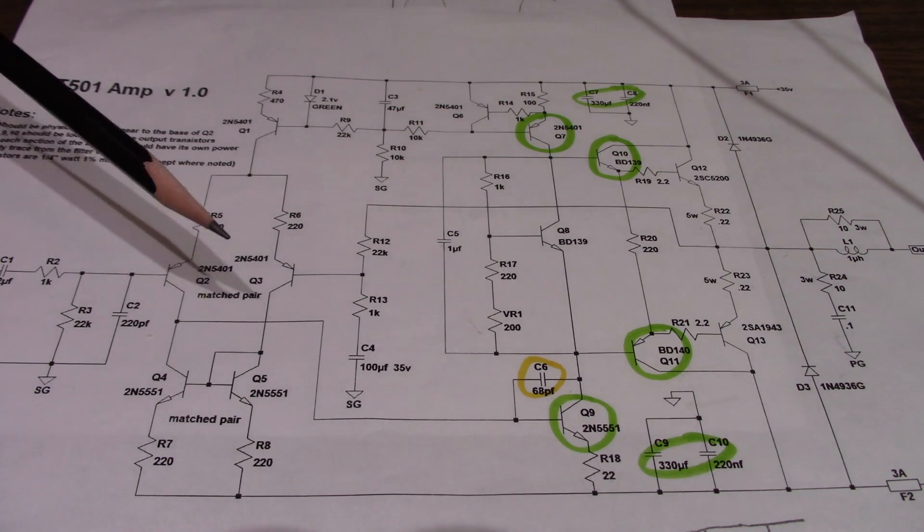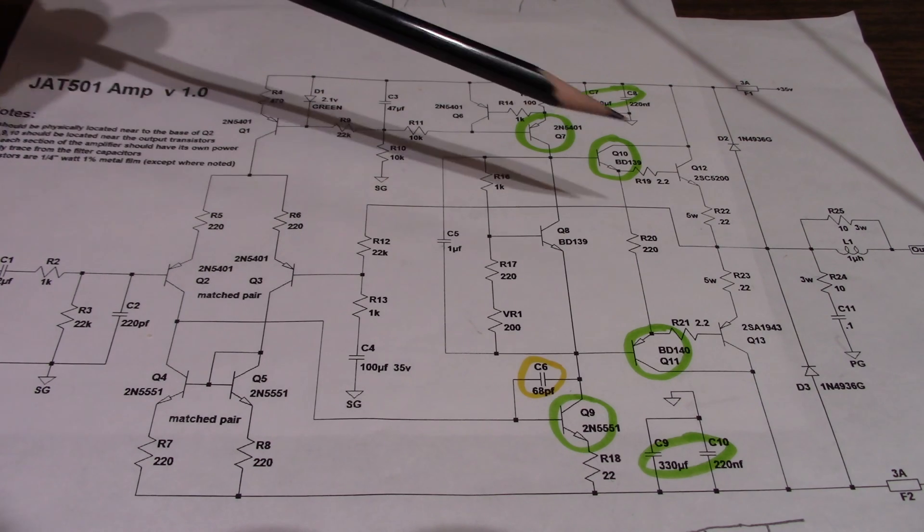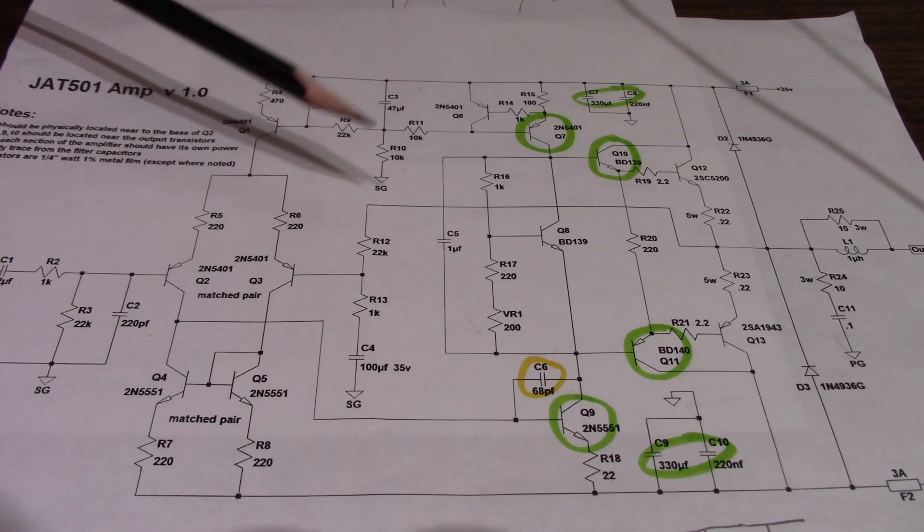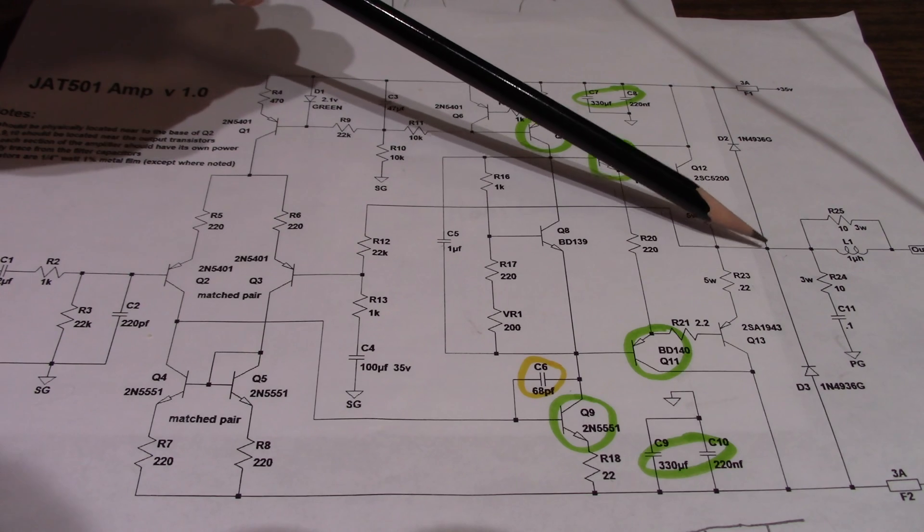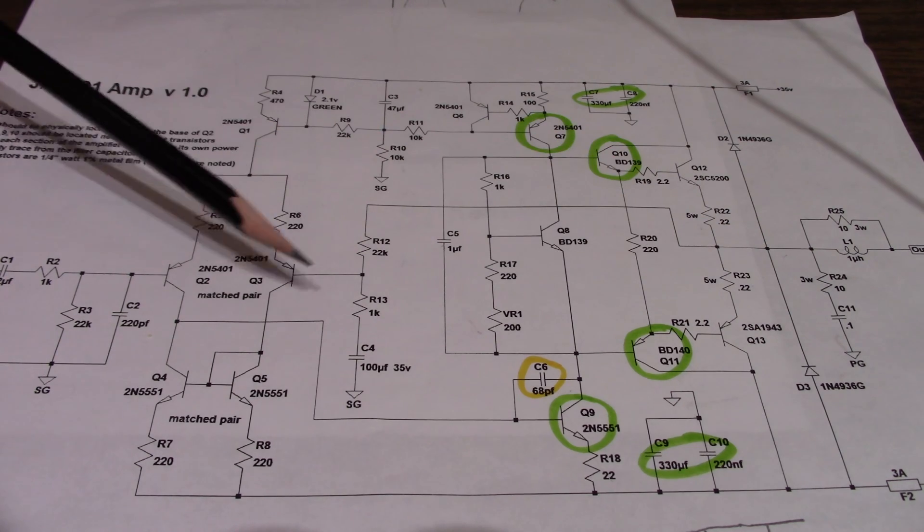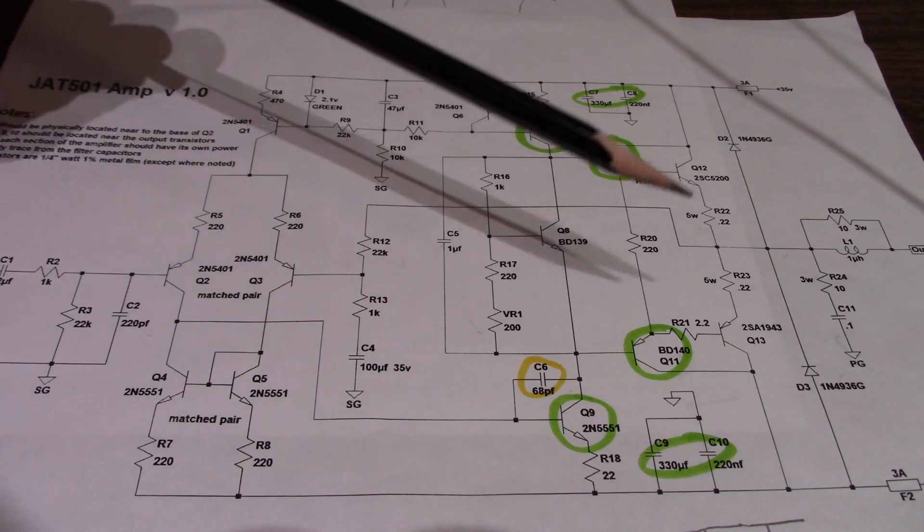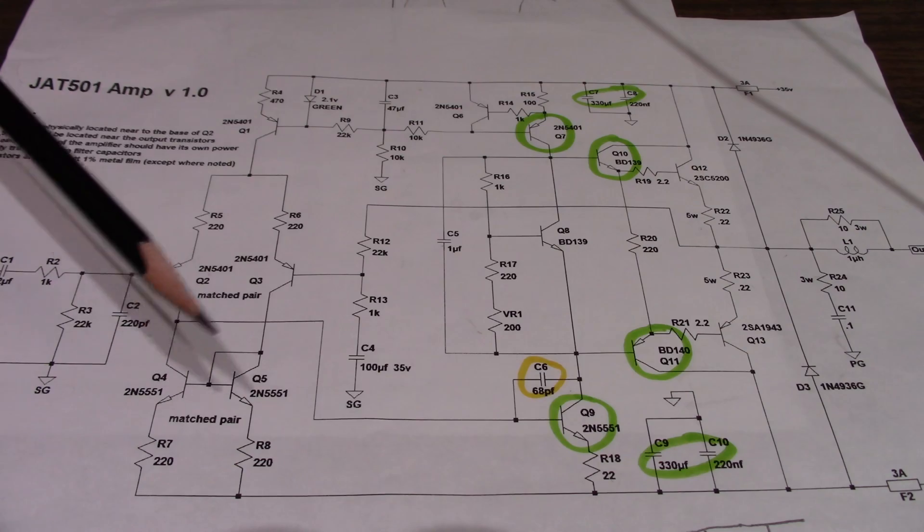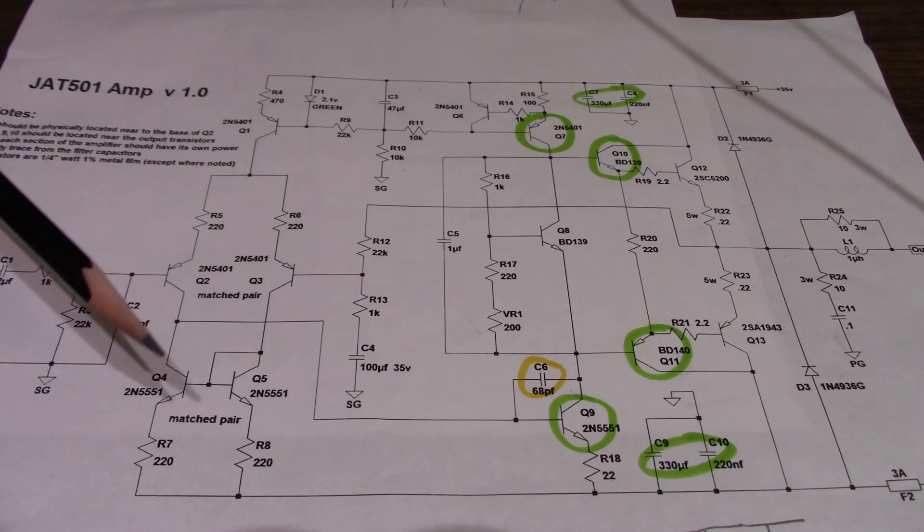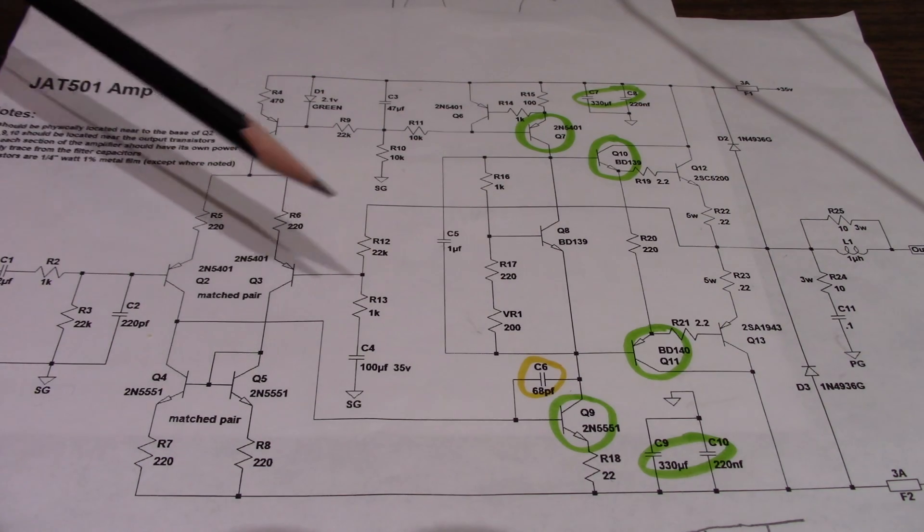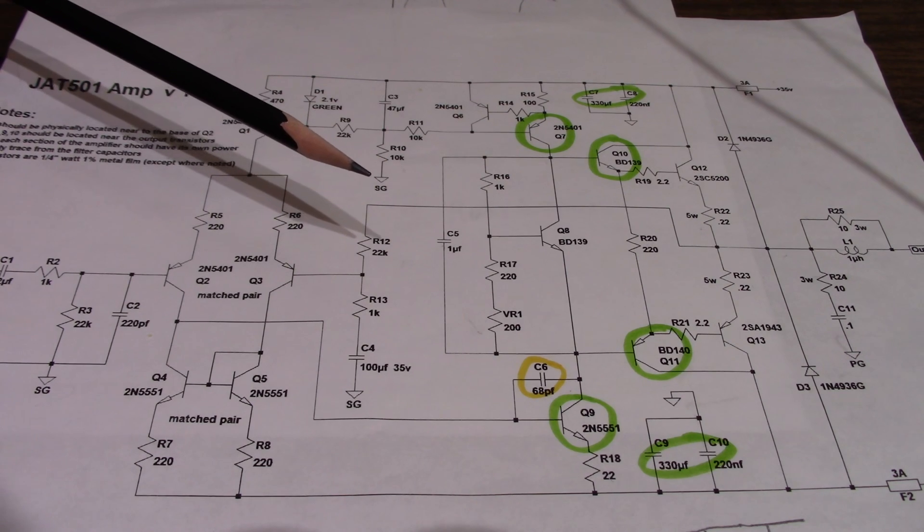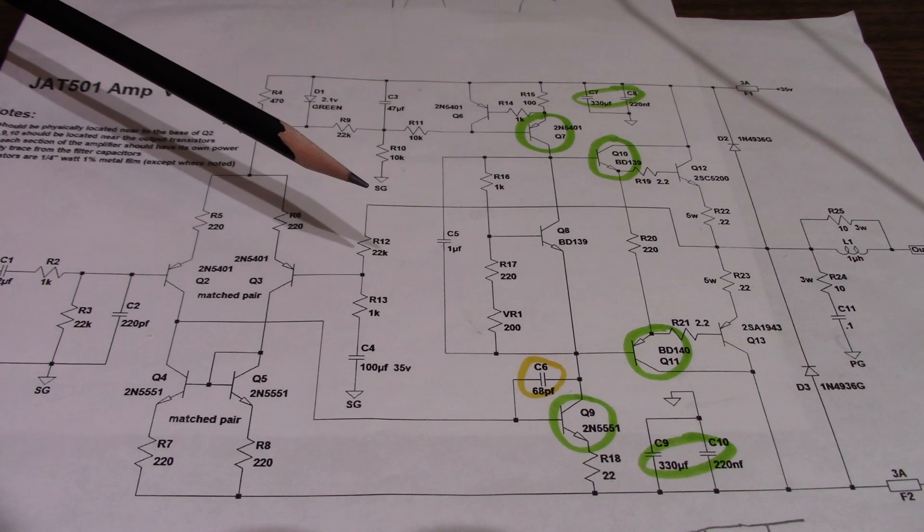So let me explain what a global and a local loop is. Using the JAT501 schematic as an example here, global loops are apparent. In this circuit, I'm taking feedback from the output, sending it to the input. So that forms a global loop. It's called global because it encompasses the entire circuit. Well, technically not the entire circuit, but most of the circuit is enclosed in this loop. And it's used to help control the gain, noise, and linearity of the amplifier.